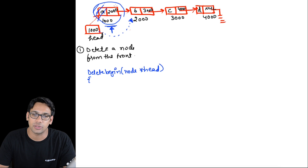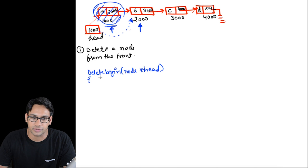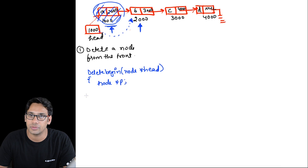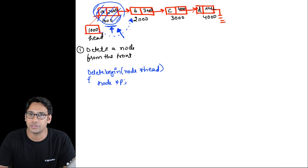If we free this memory directly, the pointer to the next node will be lost. Therefore, we need one more pointer to hold the reference to the front node before freeing it. We will make a pointer point to the front node while we make head point to the second node.